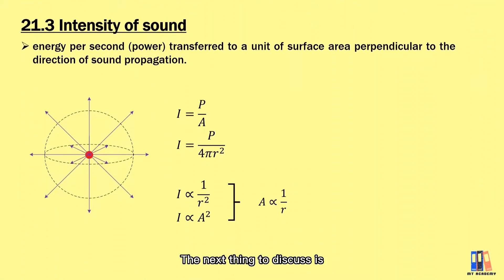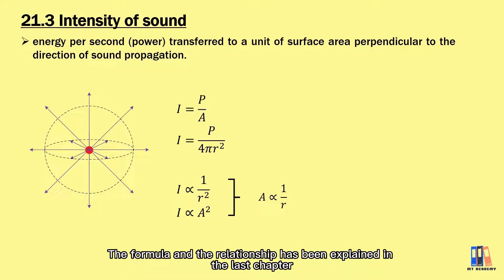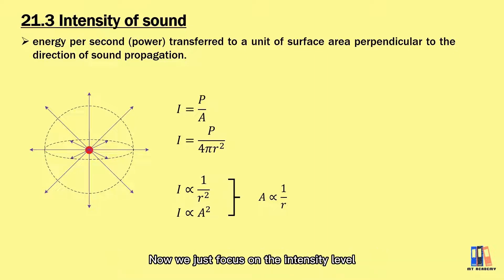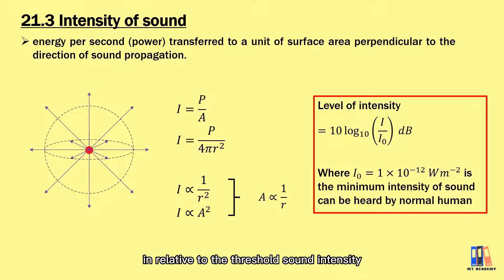So the next thing to discuss is about the intensity level of sound. We have learned about the intensity which is defined as the energy per second or the power transferred to a unit of surface area perpendicular to the direction of wave propagation. The formula and the relationship has been explained in the last chapter. So now we just focus on the intensity level which is a little bit different with intensity. It is a variable to measure the sound in relative to the threshold sound intensity that can be detected by a normal human. The formula is given as 10 log₁₀(I/I₀), where the I₀ is the threshold or the minimum sound intensity can be heard by us. The unit here is in decibel.